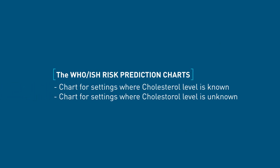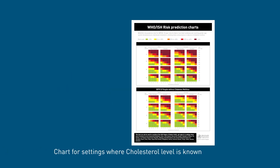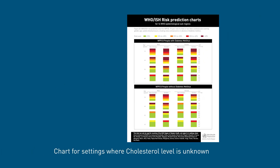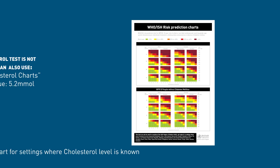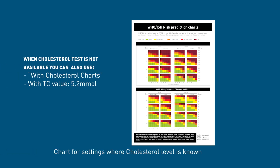There are two types of charts. One type can be used in settings where blood cholesterol can be measured. The other type is for settings in which blood cholesterol cannot be measured. An alternative way of estimating CVD risk when blood cholesterol cannot be measured is to use a total cholesterol value of 5.2 millimoles per liter with the cholesterol chart.